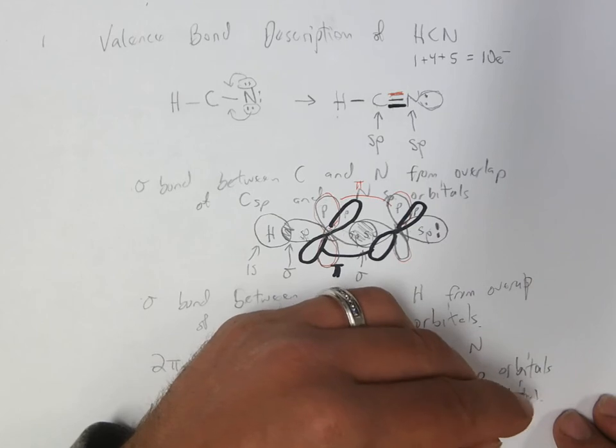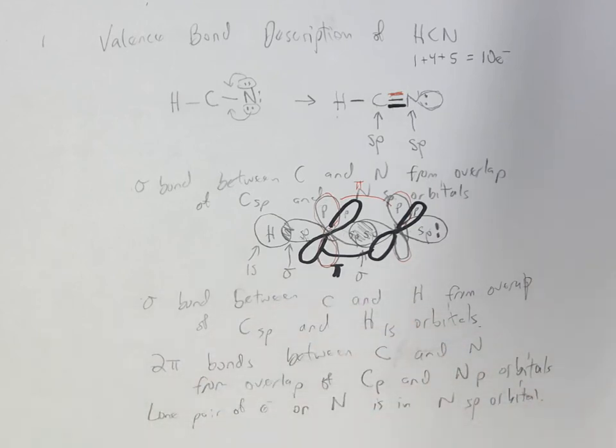If the question asks you to describe the bonding, that's a non-bonding pair. So it doesn't really fit in with our bonding picture. But it's a nice piece of information as well to show that everything in the Lewis picture is accounted for in our valence bond picture. So there it is. Valence bond description of HCN.